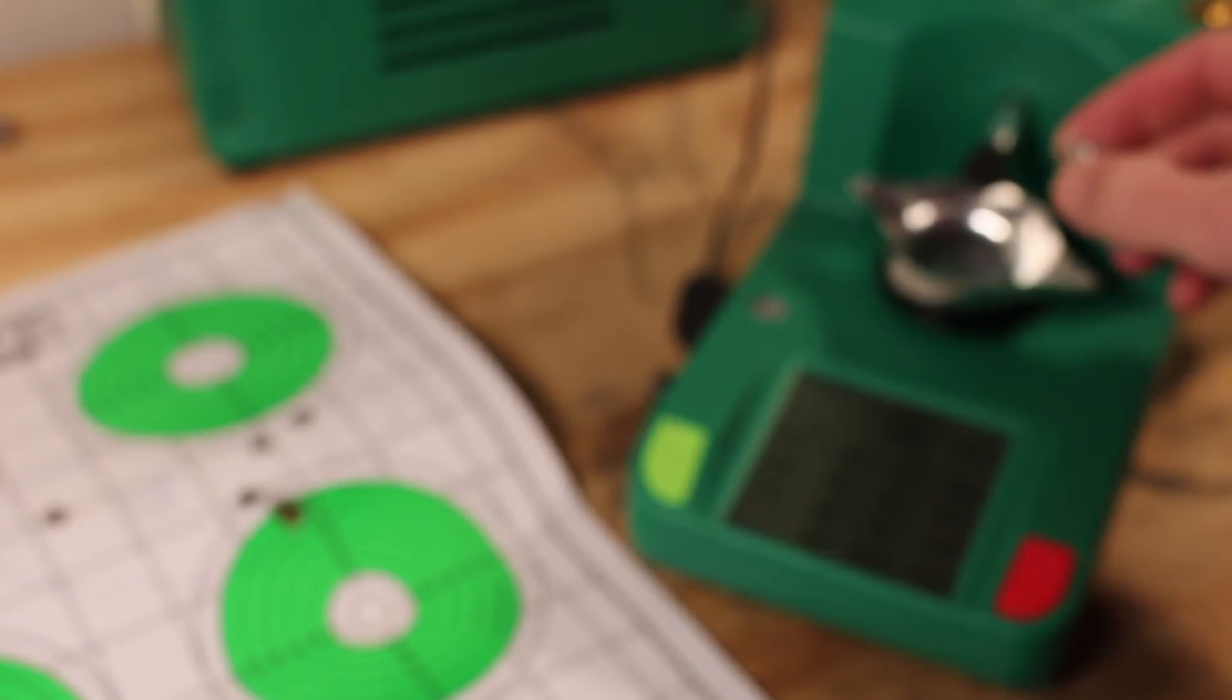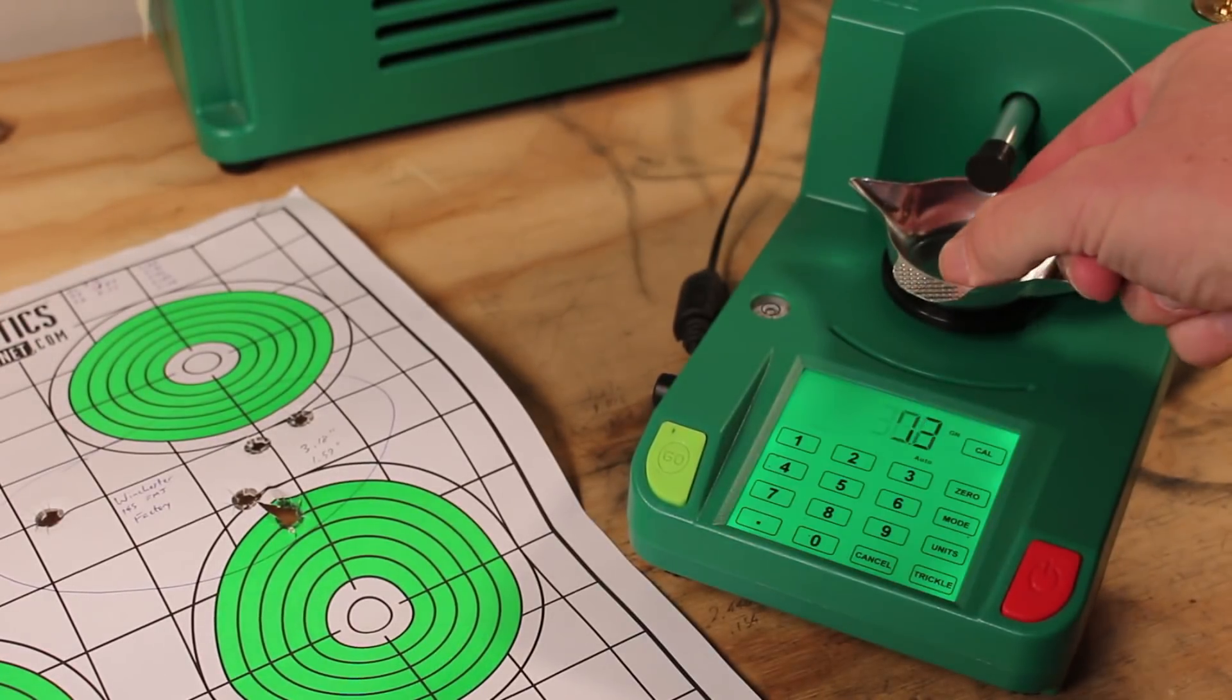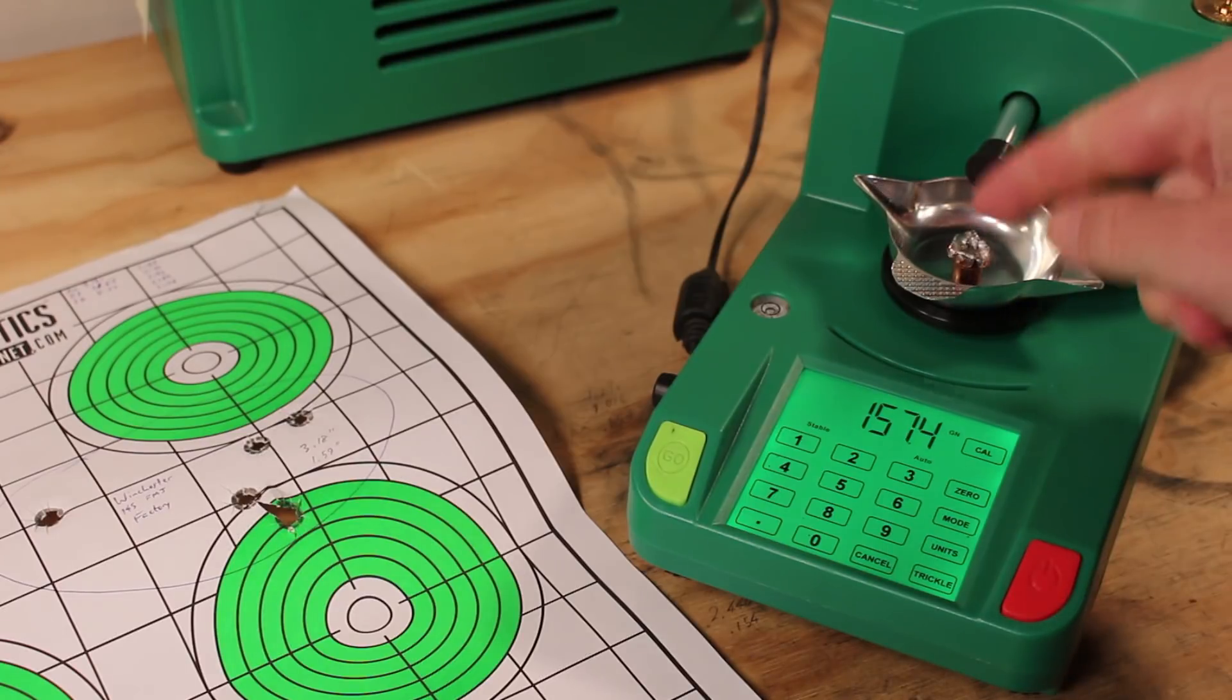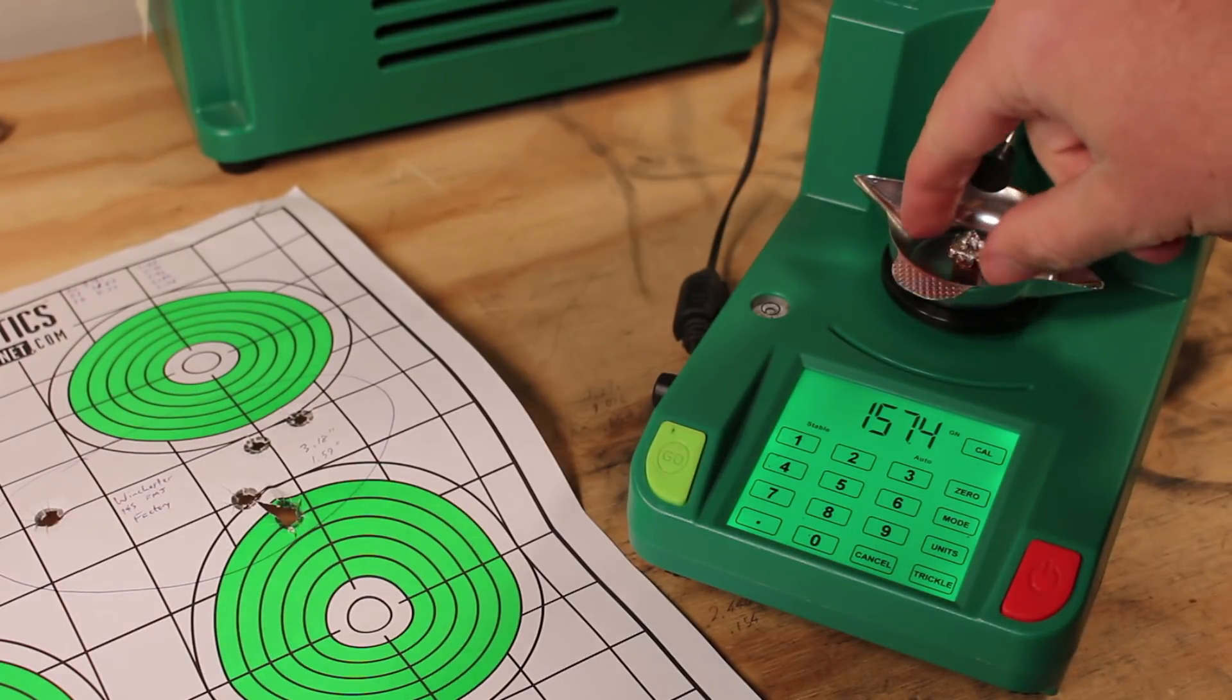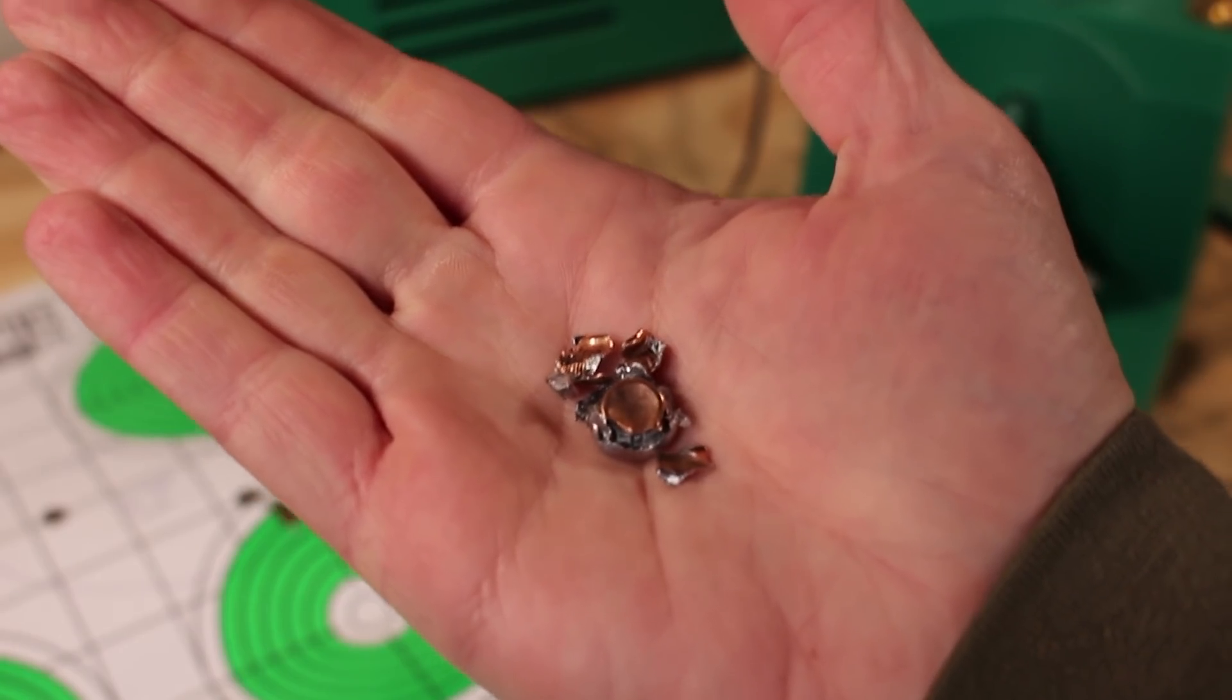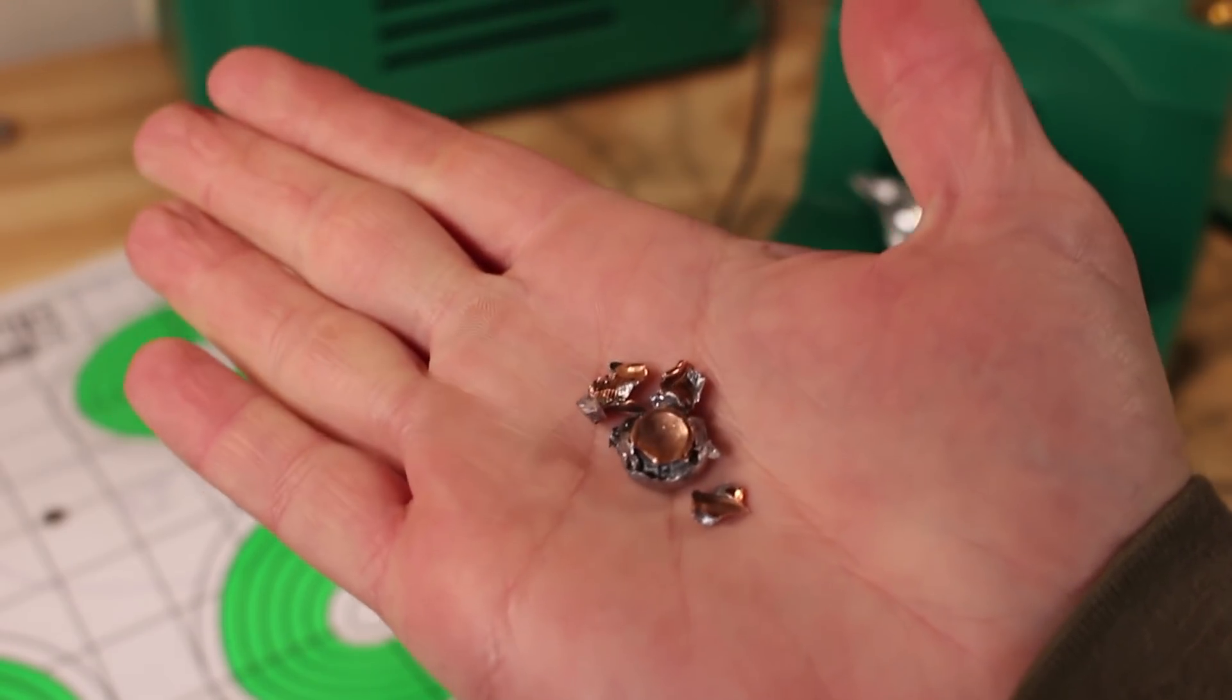This is looking just picture perfect. Let's see how much weight we were able to retain after hitting the gel. It was originally a 158 grain bullet. It is now 157.4. So we may have clipped off a little bit when it was nailed by that other bullet, but yeah, it's looking good.